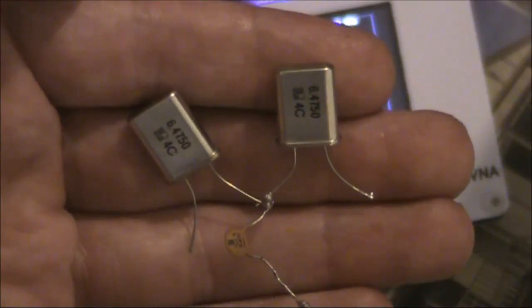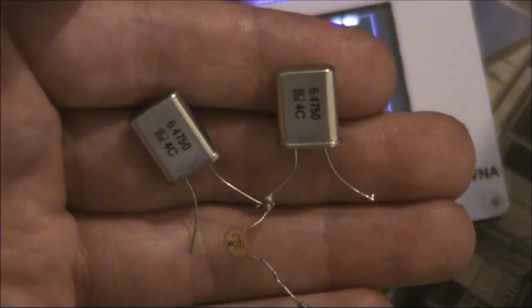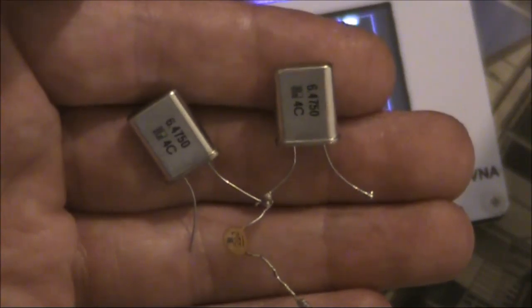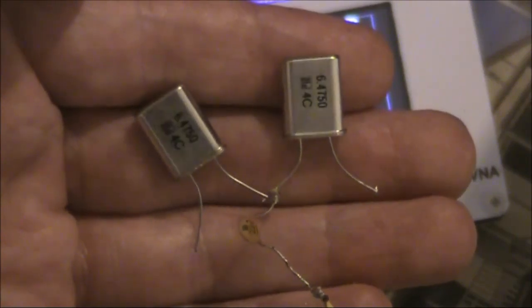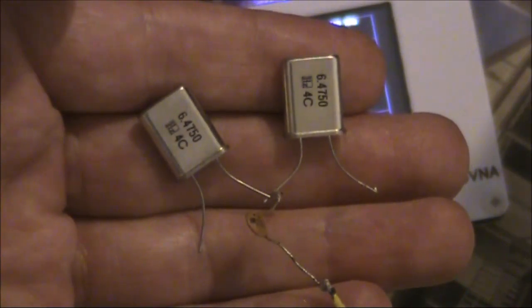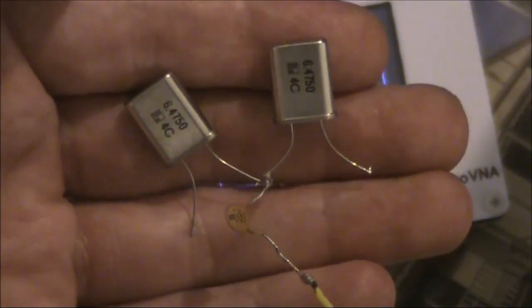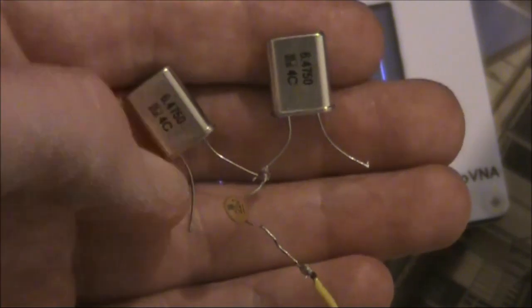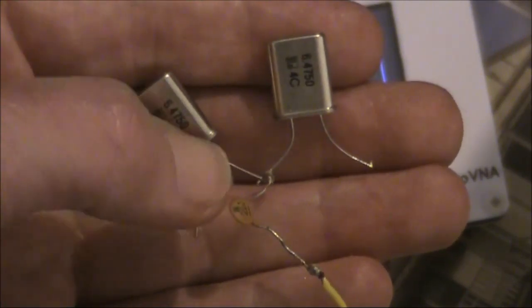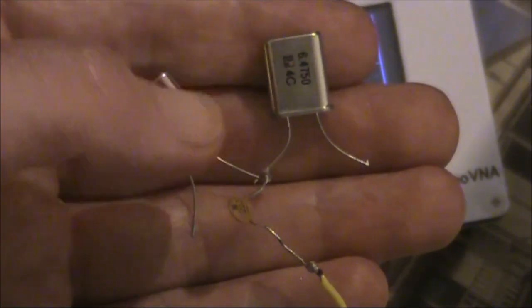You've just seen what the passband looks like with a single crystal set up as a filter. Next we'll try two crystals. Again 6.475 MHz. It's in a ladder configuration and there's a 22 pF disk ceramic capacitor to ground.